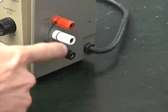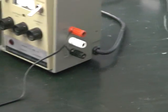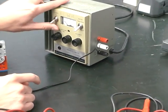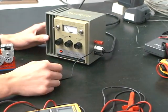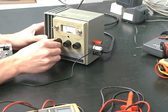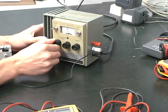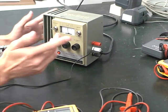And so the current now goes through the motor and then back to the power supply. So we turn it on, set it for voltage, and set it to around 9 volts.